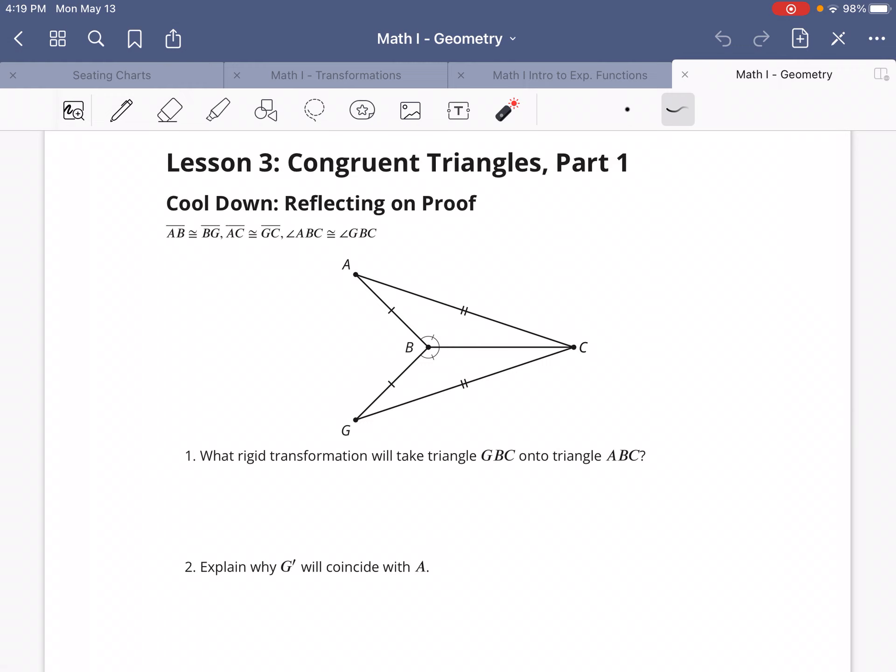Once you figure that out, the question is, how do you know that when we do our rigid transformation of some kind, that G' will coincide over here with A? And to answer that question, you really need to look at how these triangles are shaped and what pieces are congruent to each other. If you were to do a rigid transformation of some sort, how do you know that G' would end up right on top of A?